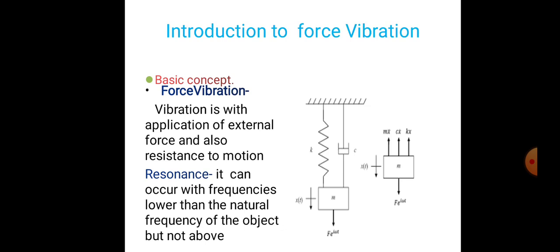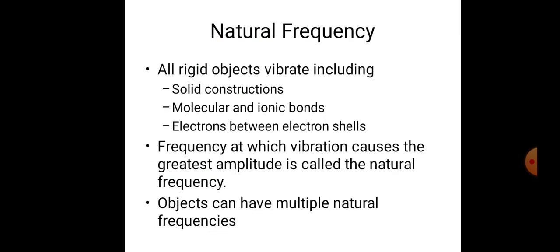We can see the conditions where the frequency equally has the same value — under that condition, resonance is produced. Now what is natural frequency? All rigid objects while operating, including solid structures, molecular and ionic bonds, and electrons between electron shells, vibrate. The frequency at which vibration causes the greatest amplitude is called the natural frequency.